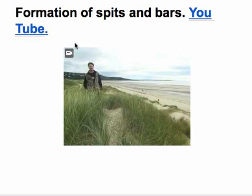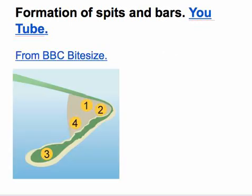What we will look at is the formation of spits and bars. Have a watch of the video — in it they will talk about how a spit forms in several locations in the UK, with some great aerial footage so you can actually see what a spit looks like. The key here is that spits form due to longshore drift, but it's when the direction of the coastline suddenly changes and the beach basically carries on forming out further into the sea. Here's a nice diagram showing the formation of a spit — you can see a spit is a beach that builds up out into the sea.